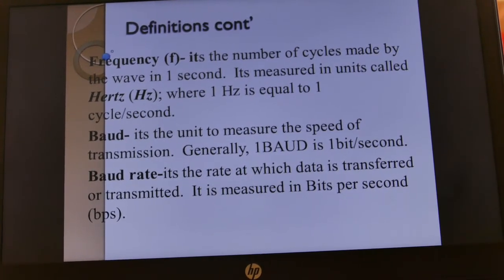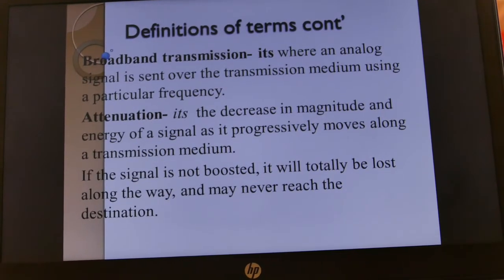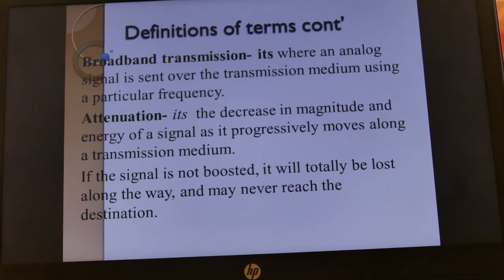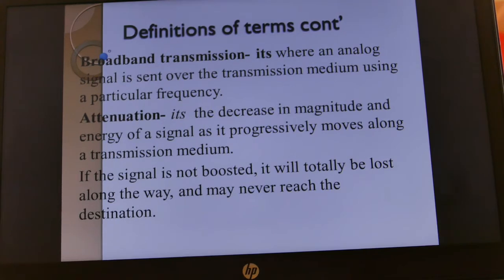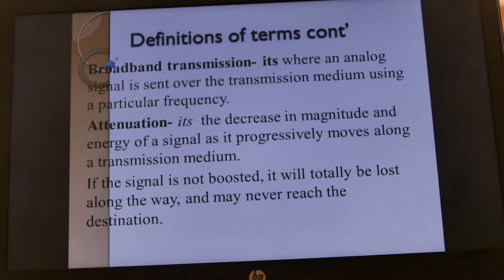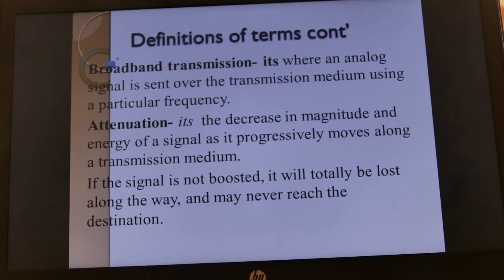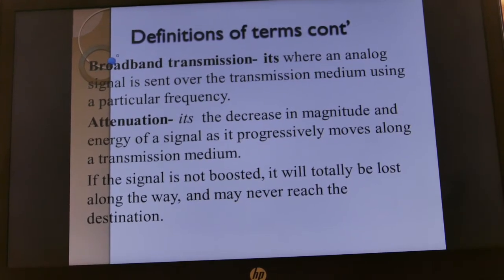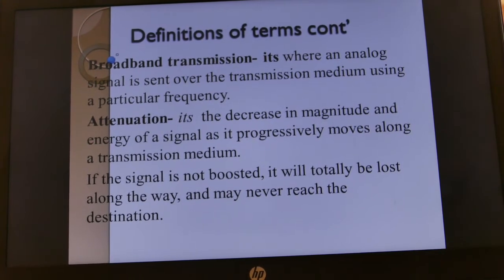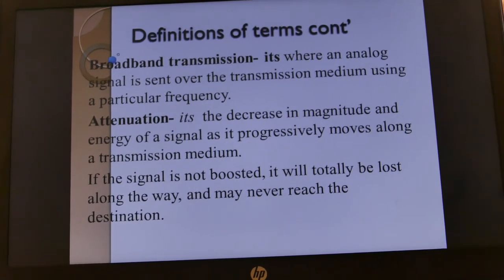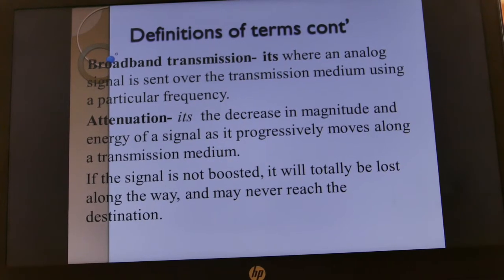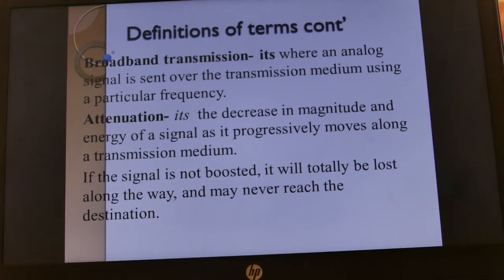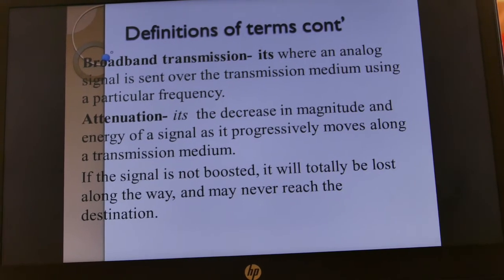The baud rate is measured in bits per second. We also have broadband transmission, where an analog signal is sent over the transmission medium using a particular frequency. We also have attenuation, which is the decrease in magnitude and energy of a signal as it progressively moves along a transmission medium. If the signal is not boosted, it will totally be lost along the way and may never reach the destination.